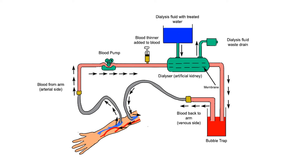When the kidney can't filter blood, nitrogenous waste accumulates in the body, causing many health problems. In such cases, an artificial kidney — called a dialysis machine — is used. Dialysis performs the same work and functioning as our natural kidney, filtering the blood artificially.